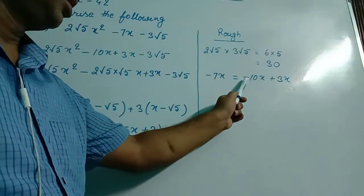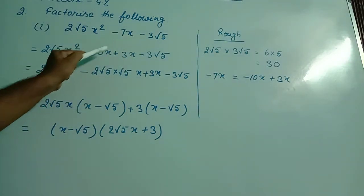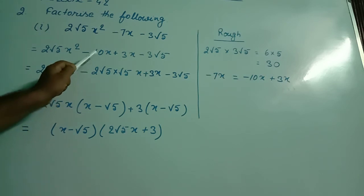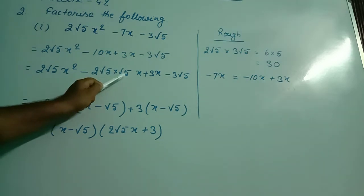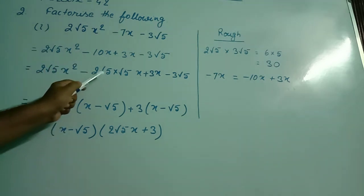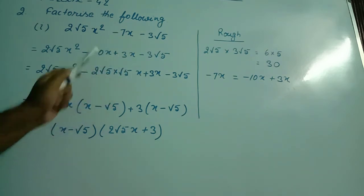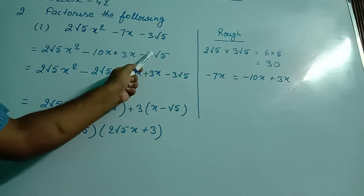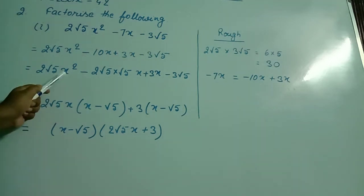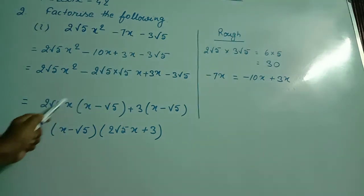In multiplication, we do not consider the sign; we simply multiply the numbers. I wrote these splitted terms, placing minus 10x plus 3x at the position of minus 7x. Now, I rewrote 10x as 2√5 × √5x, because from the first two terms we can take 2√5 as common. So 10x can be written as 2√5 × √5x, since 2 × √5 × √5 = 2 × 5 = 10. From the first two terms I took 2√5x as common, so x is left minus root 5.